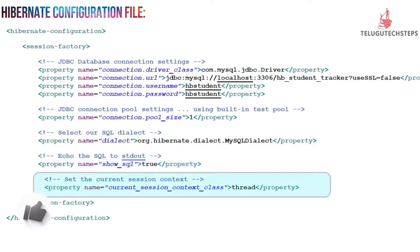The next property is current session context. The current_session_context_class property is set for session context. These are all the things in the Hibernate configuration file. This is what the configuration file actually does behind the screen.